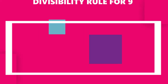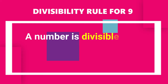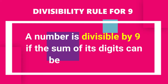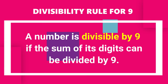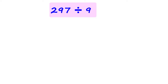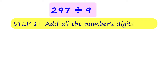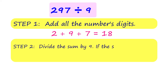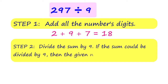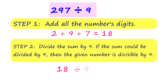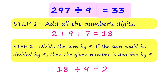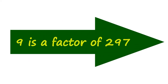Let's move on to the divisibility rule for 9. A number is divisible by 9 if the sum of the digits could be divided by 9. Let's take, for example, 297. Step 1: We get the sum of the digits of 297. Step 2: Divide the sum by 9. If the sum could be divided by 9, then the given number is divisible by 9. Since the sum of the digits is divisible by 9, then 297 is also divisible by 9. 9 is a factor of 297.